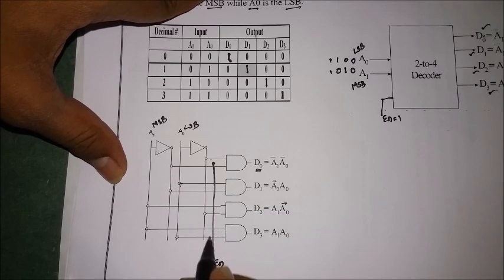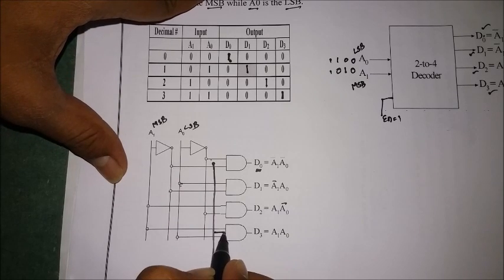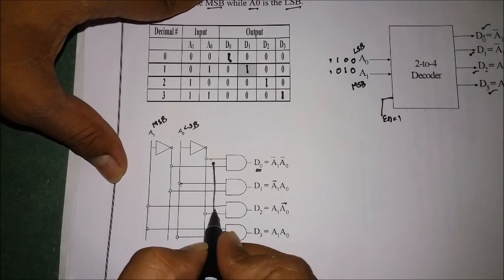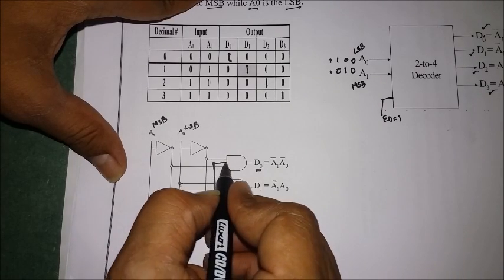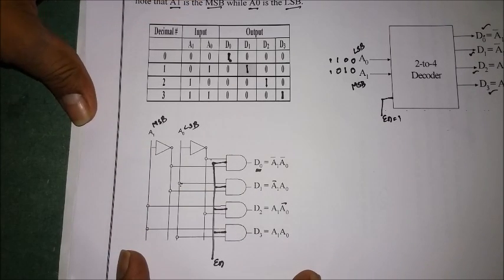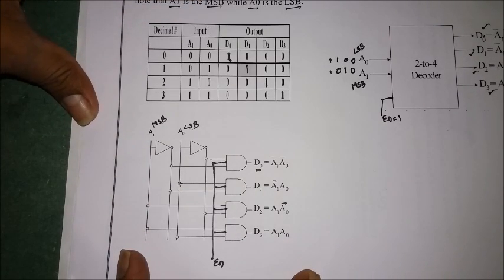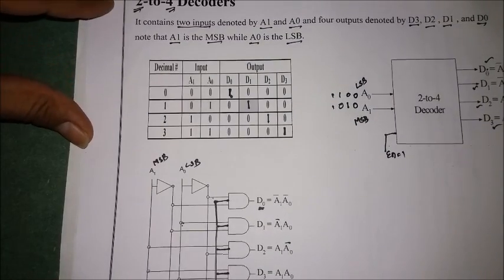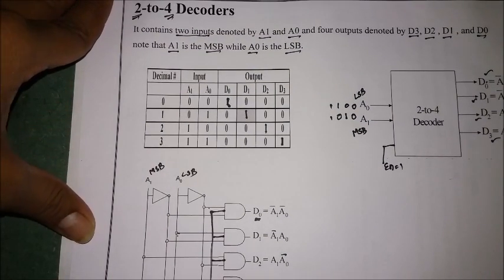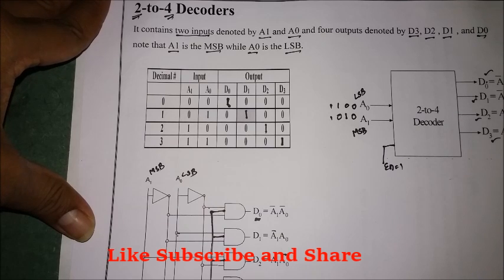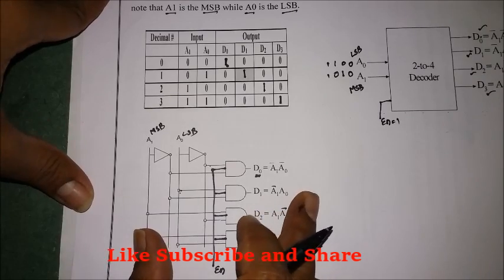The enable line connected to each AND gate completes the 2-to-4 line decoder circuit. This is how we design a 2-to-4 line decoder — when two inputs are given, four outputs are produced, with one output selected at a time.